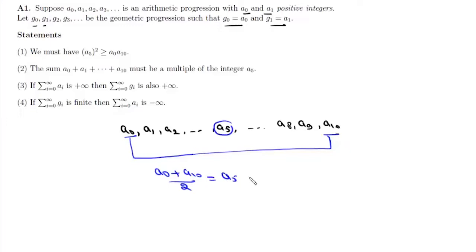Now AM is greater than or equal to GM, so it will be greater than or equal to the square root of a0·a10. And if we square it, we will get a5² ≥ a0·a10. That means statement 1 is correct.